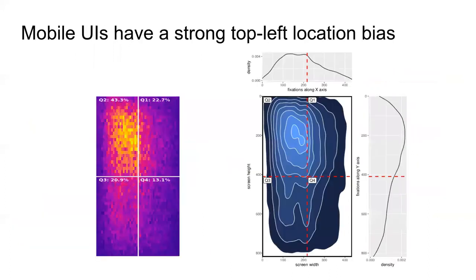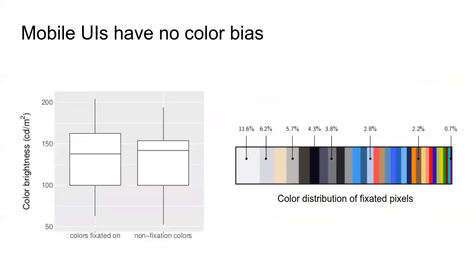We observed a strong location bias toward the top-left portion, which attracted most of the fixations. This suggests no center nor horizontal bias is present on mobile UIs. We did not find a color bias affecting saliency on mobile UIs; if attention is drawn to bright colors, the effect is too modest to be of practical significance.